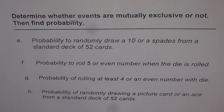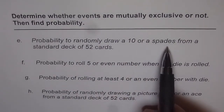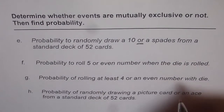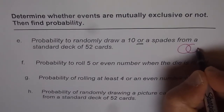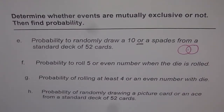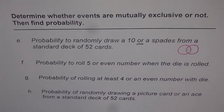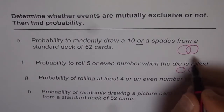Let us go through these questions and figure out if these events are mutually exclusive or not. Part E: probability to randomly draw a 10 or a spade from a deck of 52 cards. Is it mutually exclusive or not? When there is an OR operation, we are looking for something within two different groups. But even if it is OR, there are a lot of ANDs in between. We need to figure out whether the two event sets overlap or are completely separate. If separate, it is mutually exclusive; if they overlap, it is not.